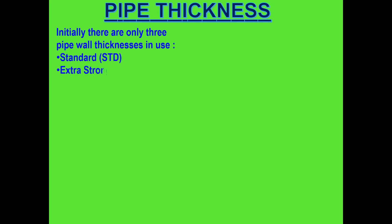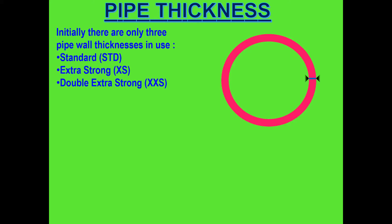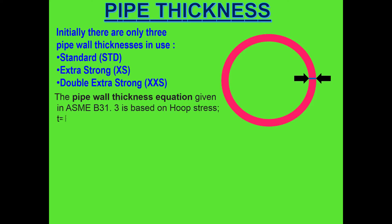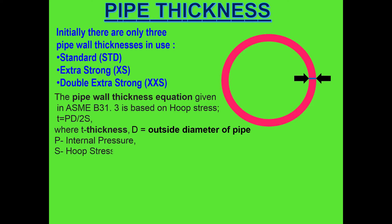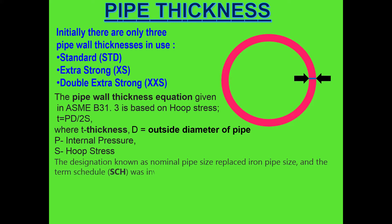Next we see about pipe thickness. Initially there are only three pipe wall thicknesses in use: standard (STD), extra strong (XS), and double extra strong (XXS). The pipe wall thickness equation given in ASME B31.3 is based on hoop stress: T = PD / 2S, where T equals thickness, D equals outside diameter of pipe, P equals internal pressure, and S equals hoop stress.